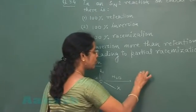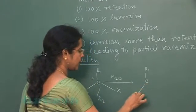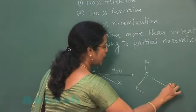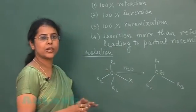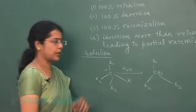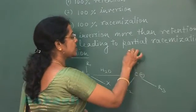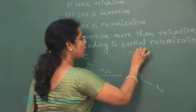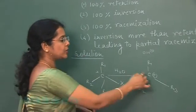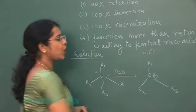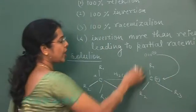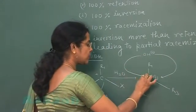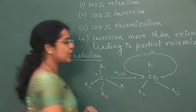First step is the formation of carbocation. R1, R2, R3 and this carbon atom which is planar, this is carbocation. In second step, nucleophile of the reaction will attack on this carbon atom.